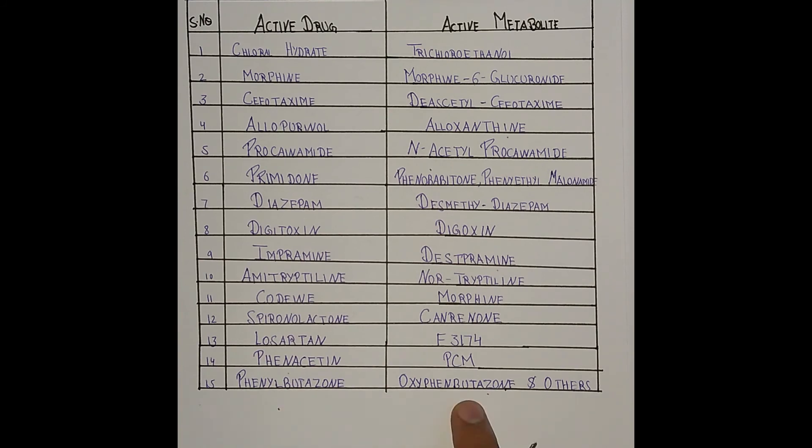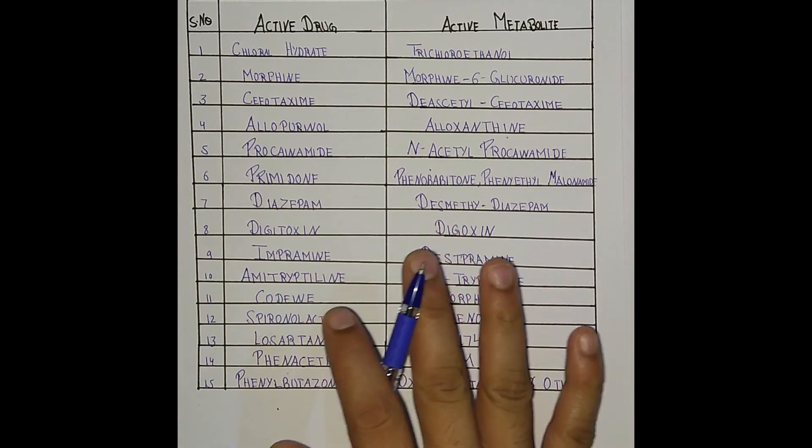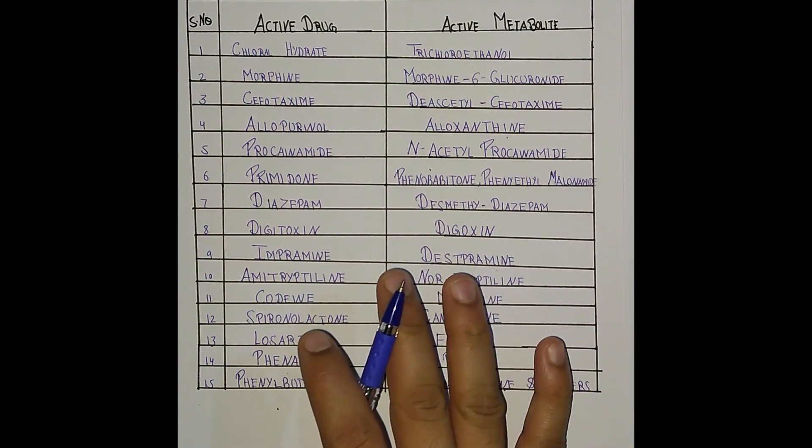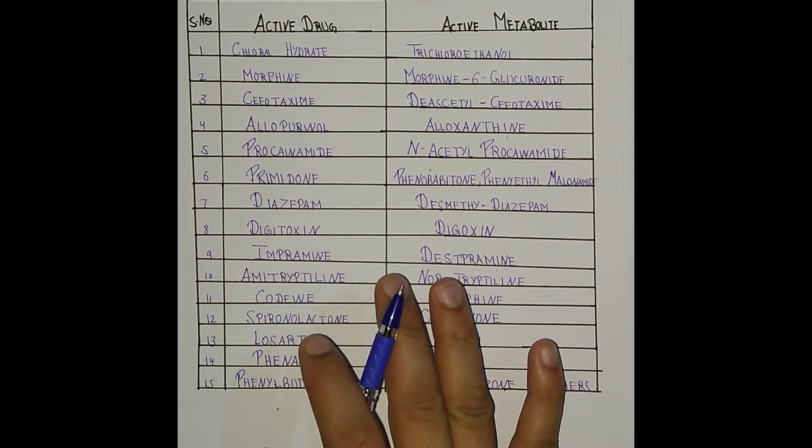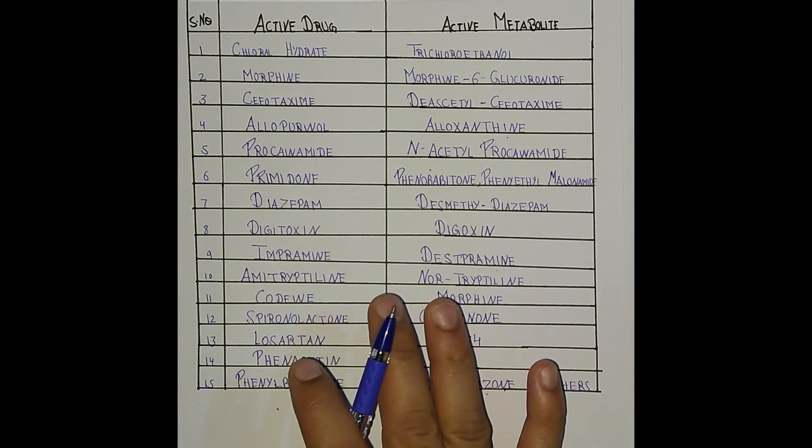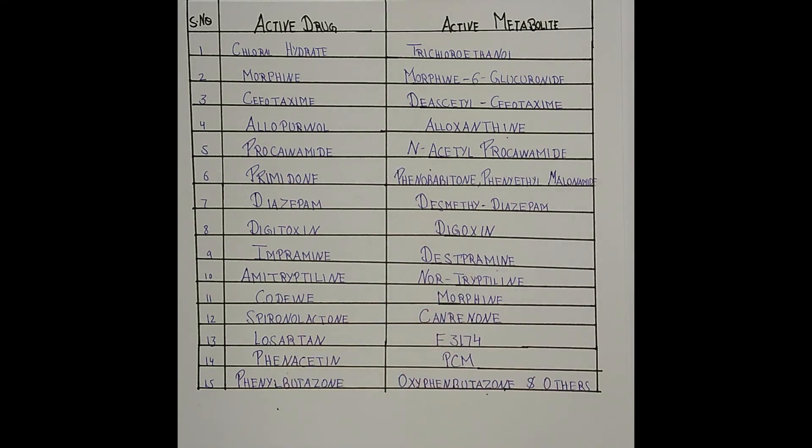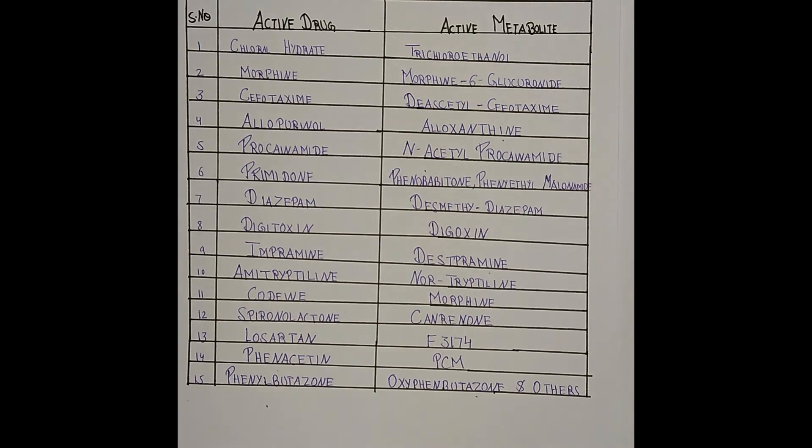Phenylbutazone has an active metabolite oxyphenbutazone and others. Students, I hope that this table is clear. Please try to note down in your notebook and get revised on time. If you just liked the video, please subscribe and hit the bell icon for getting more updates on our upcoming videos. Thanks for watching.